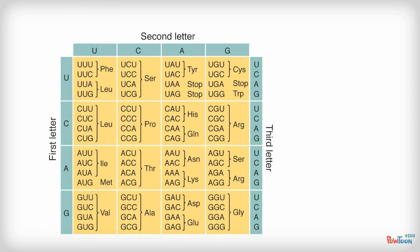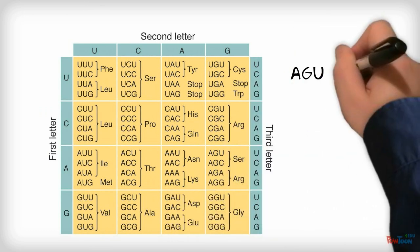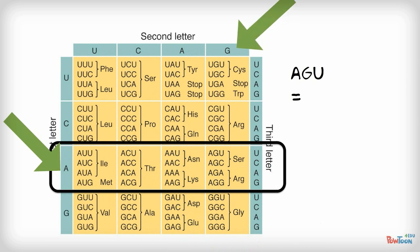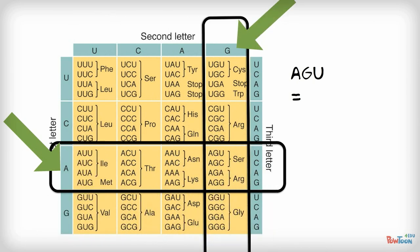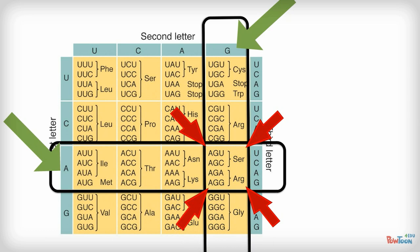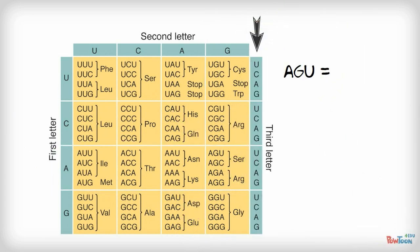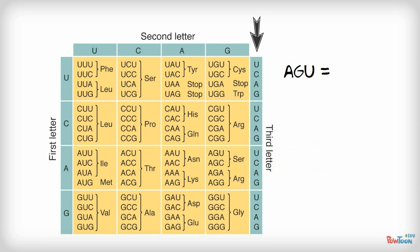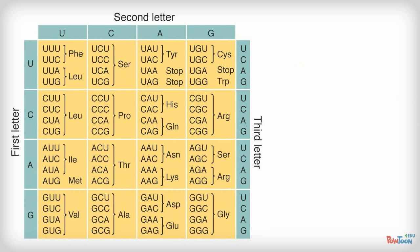Let's do another one — the codon AGU. We go to the third row for the A, and then to the fourth column for the G. At the intersection of these two, we find a cell in which all four codons start with AG. The third letter is shown in the teal column on the right side of this cell, in the order U, C, A, G from top to bottom. AGU is the first codon in this cell, and it stands for the amino acid serine. You can see that the next codon down, AGC, also codes for serine.